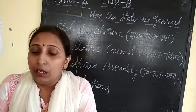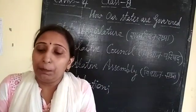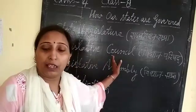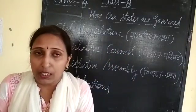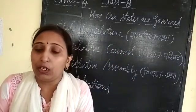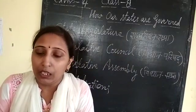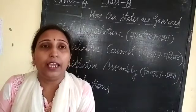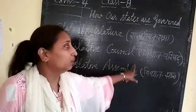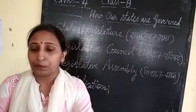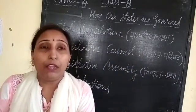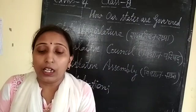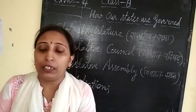Now, the Speaker and the Deputy Speaker. Who are these? The Speaker and the Deputy Speaker are elected from among the members of the assembly. Once the assembly is formed, the election of the Speaker and Deputy Speaker takes place, and the Speaker conducts the meetings. The time period is 5 years, but the Governor can dissolve the assembly before it completes its term.